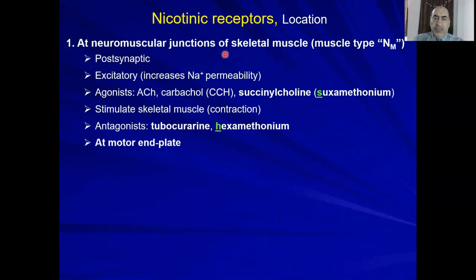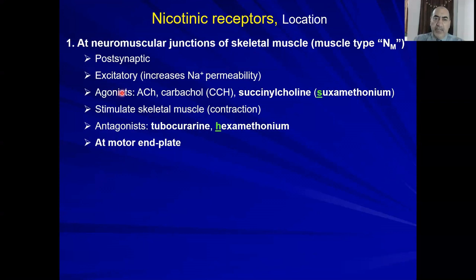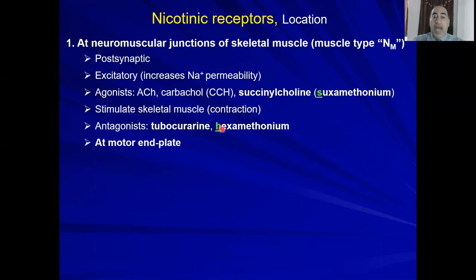The NM receptor — the somatic one on the skeletal muscle — is located at the motor end plate. It is post-synaptic and increases sodium permeability, so it is excitatory. Agonists include acetylcholine, carbachol, and succinylcholine (also called suxamethonium). This stimulates skeletal muscle causing contraction. Antagonists include tubocurarine and hexamethonium.